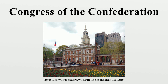Rather than having a fixed capital, the Congress of the Confederation met in numerous locations which may be considered United States capitals. The Congress initially met at the old Pennsylvania State House in Philadelphia, Pennsylvania. It then met at Nassau Hall in Princeton, New Jersey; at the Maryland State House in Annapolis, Maryland; at the French Arms Tavern in Trenton, New Jersey; and at the City Hall of New York in New York City.